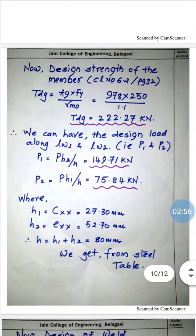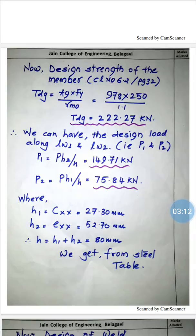The value h1 is nothing but Cxx, which we get from the steel table, and h2 is Exx = 52.7 mm. The total height h = h1 + h2 = 80 mm. These properties can be obtained from the steel table for ISA 80×50×8 unequal angle.